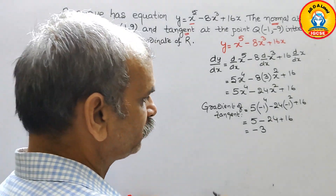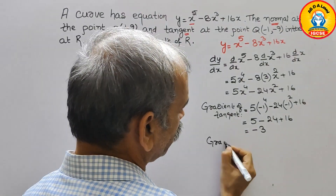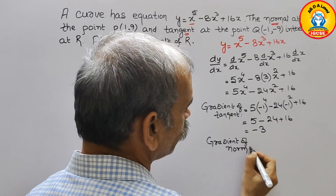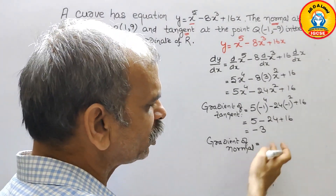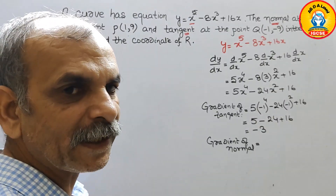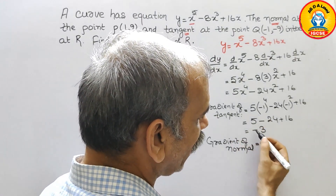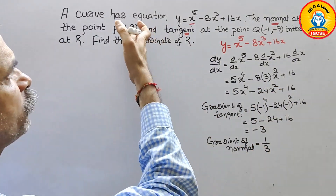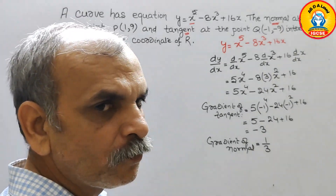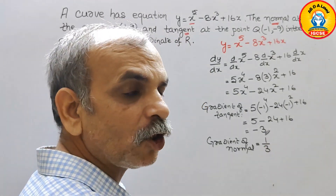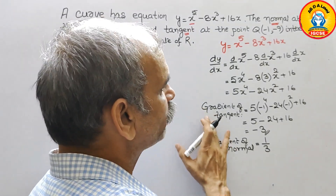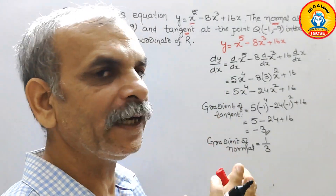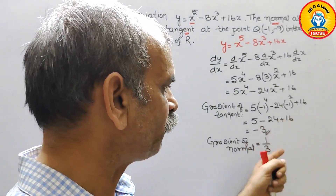So what is the gradient of the normal? We just reciprocate and change the sign. So the gradient of the normal = 1/3. Note: we need not substitute the point (1, 9) separately — if you substitute that x value you will also get -3 for the tangent gradient, so we use what we have already found.